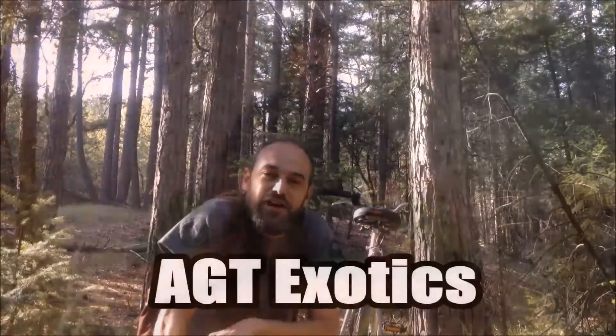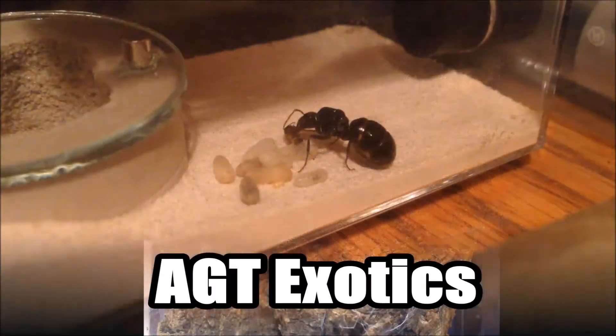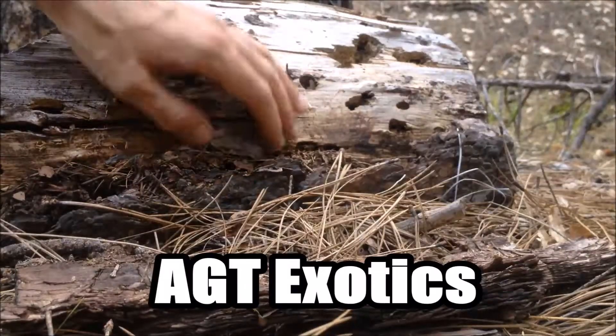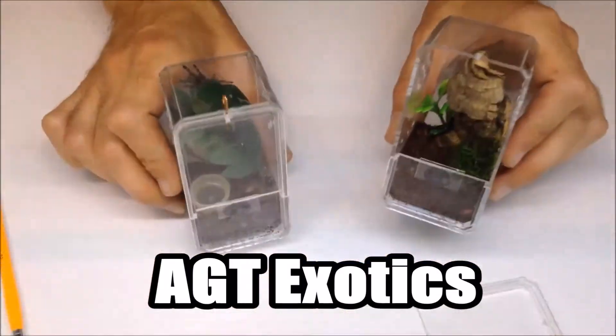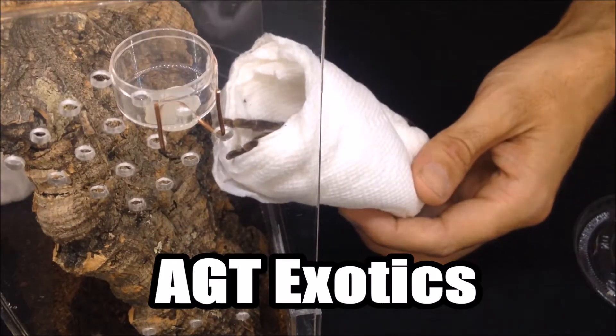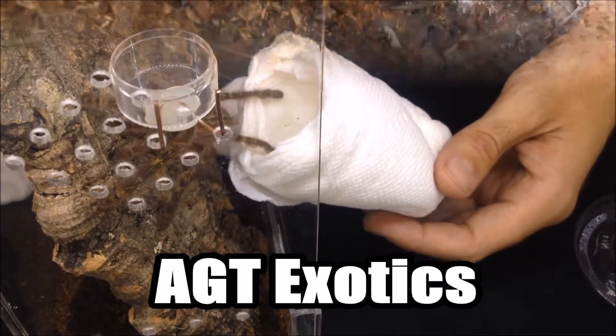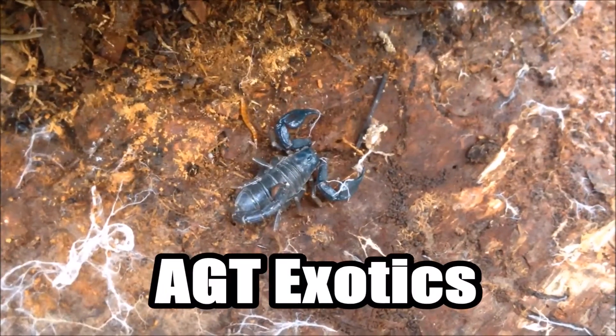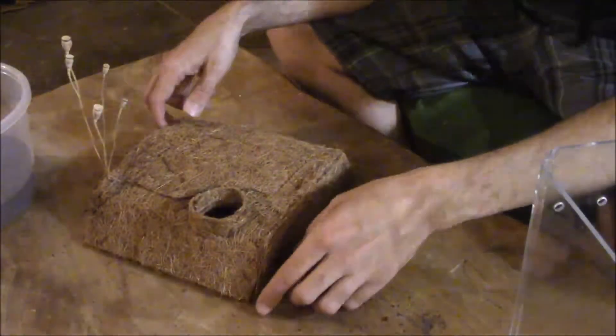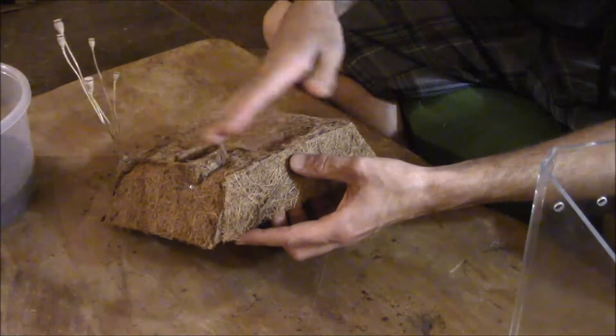Alright so here's the false bottom. What I have is a hole for it to get into its hide right there. And I kind of put a rim around it so that substrate won't keep falling into the hole.